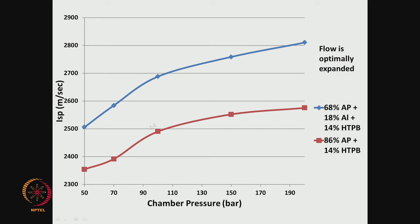For solid propellants, a graph shows chamber pressure on the X-axis and ISP on the Y-axis, with optimally expanded flow at each pressure. The red line is a non-aluminized propellant and the blue line is an aluminized propellant. The aluminized propellant always has higher ISP because aluminum combustion raises chamber temperature. Both ISPs increase with increasing pressure.